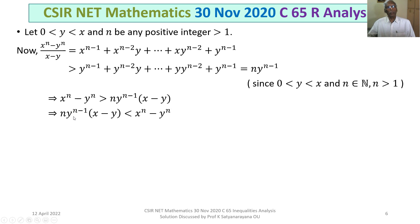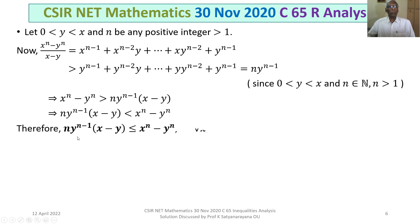This implies n·y^(n-1)·(x - y) < x^n - y^n. Combining with the earlier exceptions where y = x or n = 1, we get: n·y^(n-1)·(x - y) ≤ x^n - y^n. This is true for all x, y real numbers when 0 < y ≤ x and n ∈ ℕ.